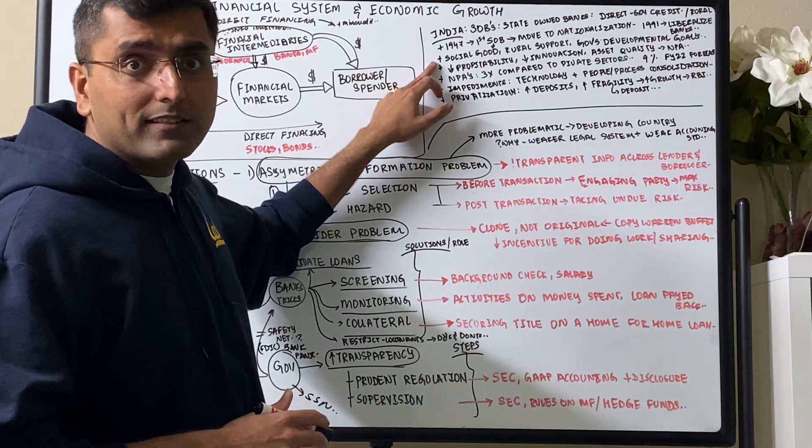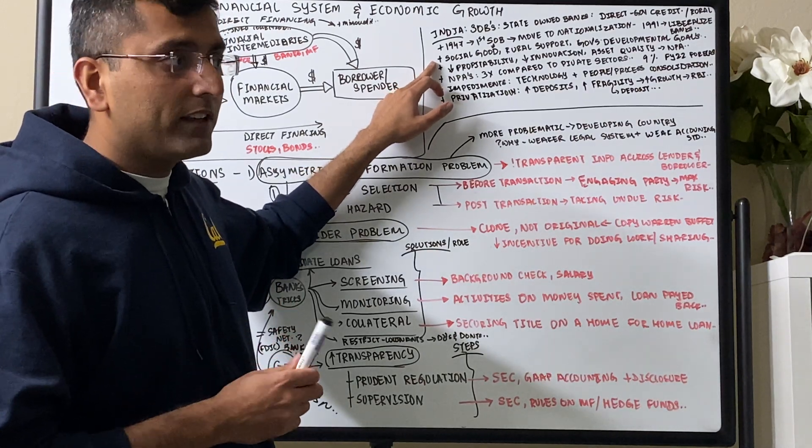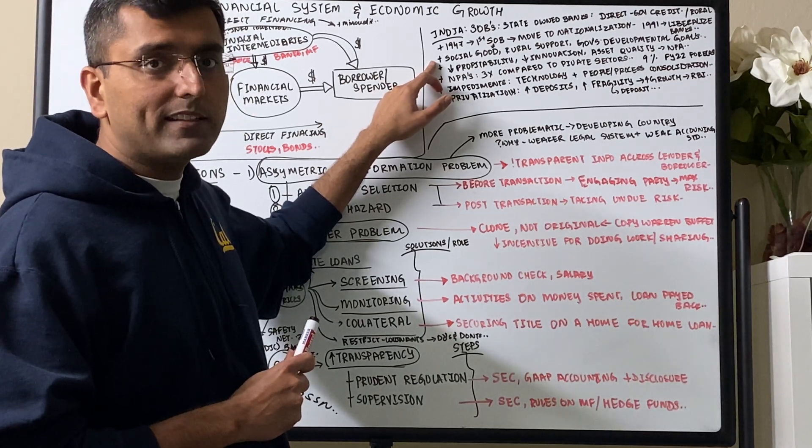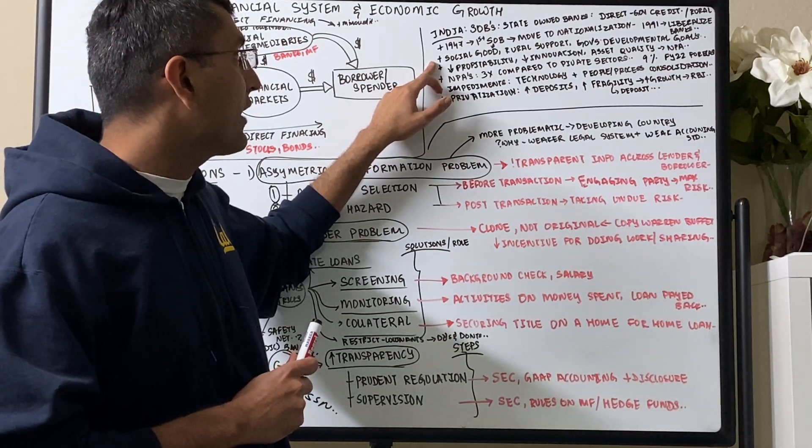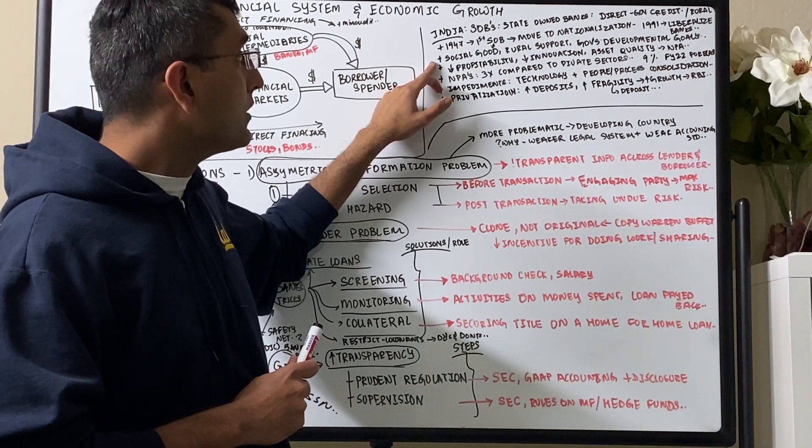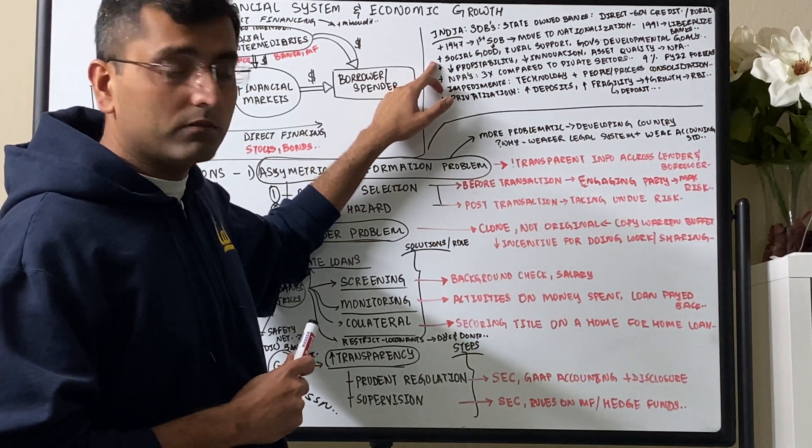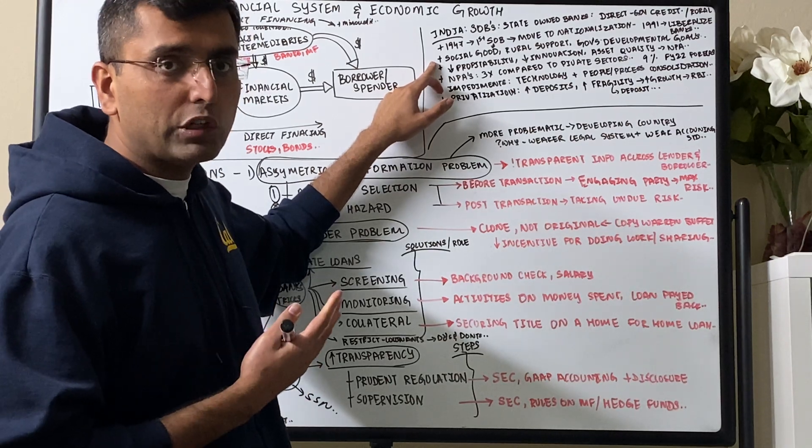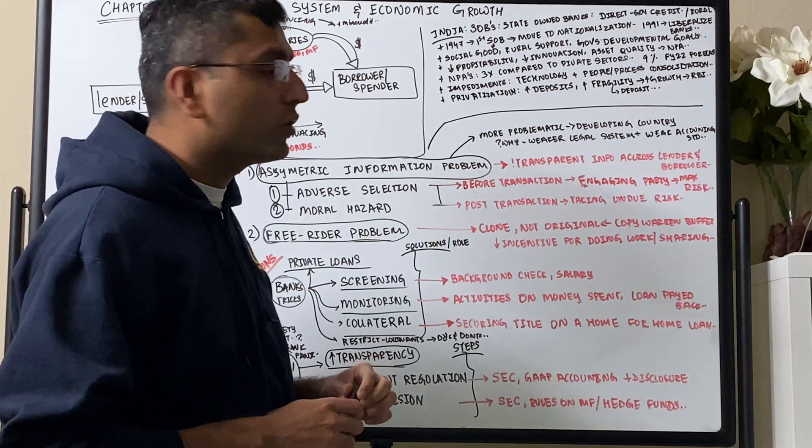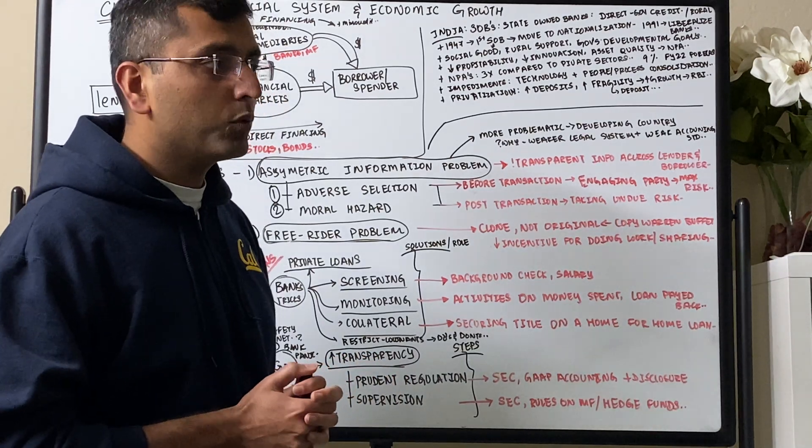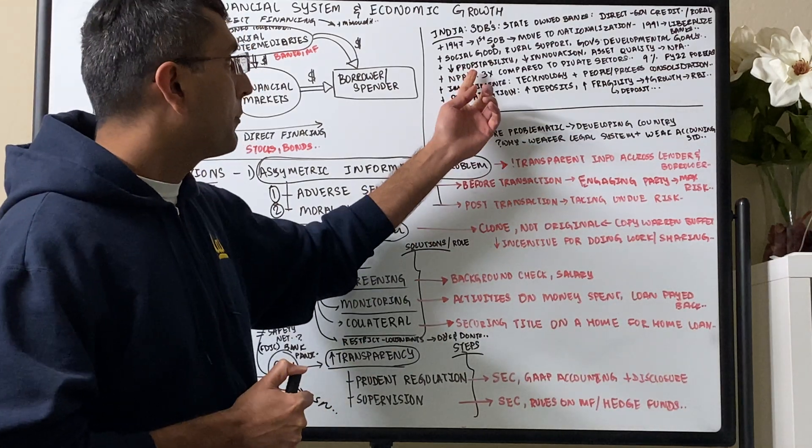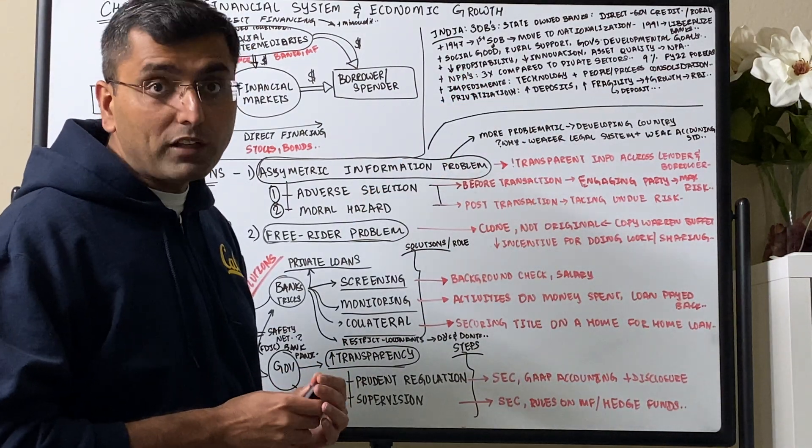The state-owned banks still exist in India with majority of the deposits, but that's changing very quickly with private sector gaining a lot of traction. State-owned banks give a lot of social good, so they support social good by investing in government development goals. They also support rural goals, rural development. But a lot of this is not profitable. Their deposits are also failing.